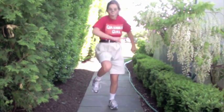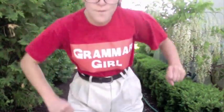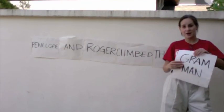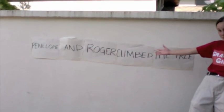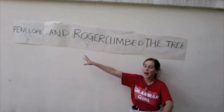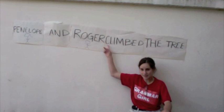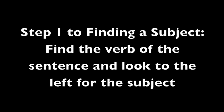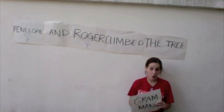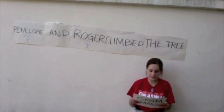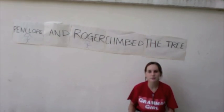There are four steps to finding a subject. Grammar Girl reporting live with Roger and Penelope. The sentence is 'Penelope and Roger climbed the tree.' The first step is to find the verb and look to the left of it for the subject of the sentence.